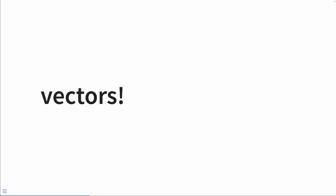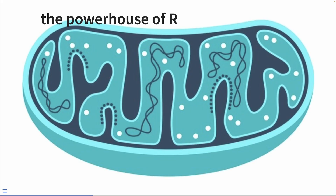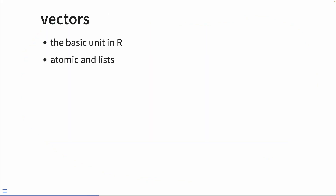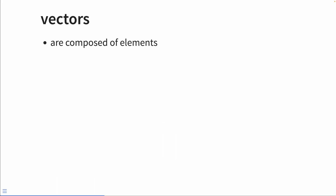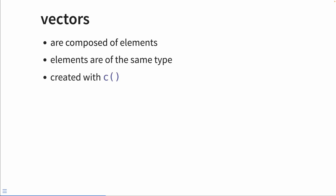You most likely did something each time in a loop that can be done only once with a vectorized function. Let's start with vectors. Like the mitochondria is the powerhouse of the cell, vectors are the powerhouse of R — they are the basic unit in R. There are two types: atomic and lists. There are four main types of atomic vectors: logical, integer, double, and character. Atomic vectors only store one type of data at a time and are created with the c() function. A logical vector with three elements might contain TRUE, FALSE, and NA.